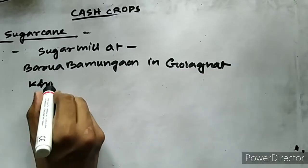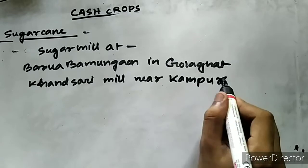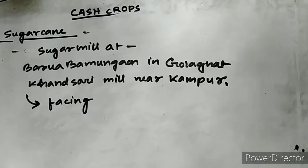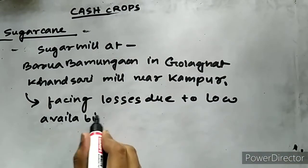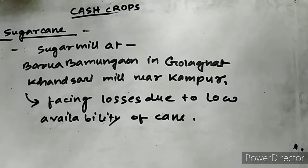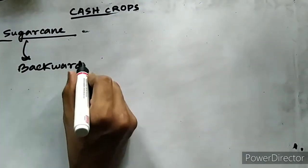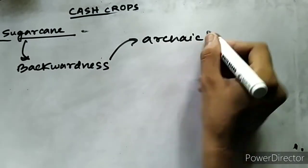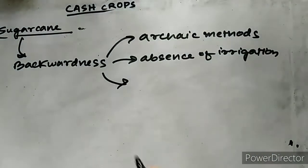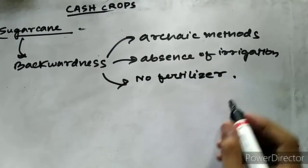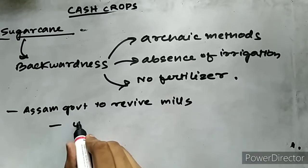The various reasons behind the backwardness of the production can be said as the use of archaic methods of cultivation, absence of artificial irrigation, and lack of use of fertilizer or manure. However, government have recently decided to revive these sugar mills which they will use to produce ethanol that can be blended with fuel.